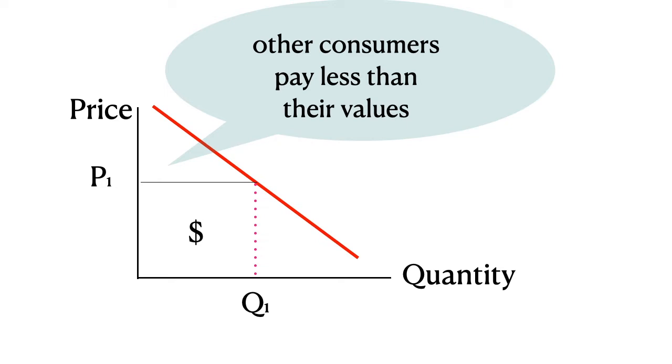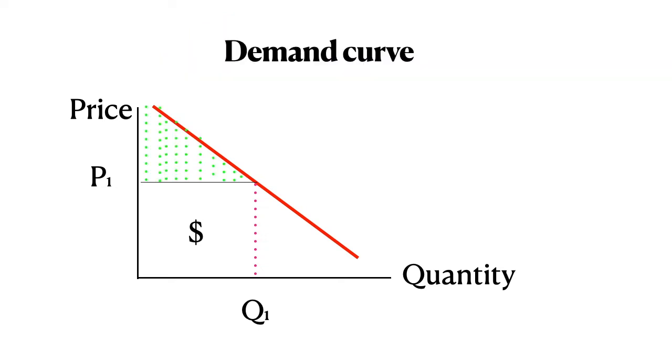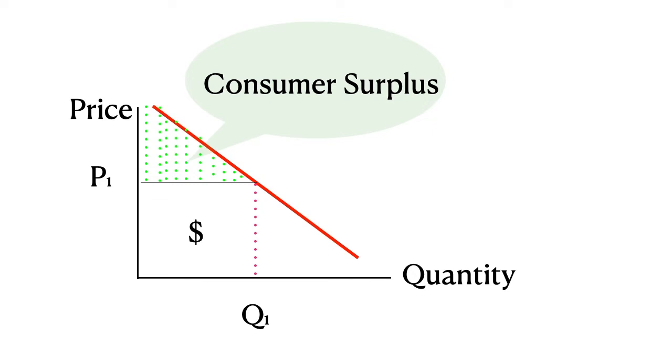So that is some extra value or net value to them or surplus value to them. So if we look at the difference between the willingness to pay shown on the demand curve and that P1, the price they actually have to pay, you can see for all of those consumers that the differences, all the consumers up to Q1, that they have some net benefits.